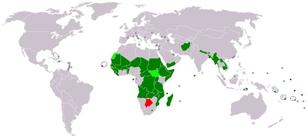Effects of global warming and climate change are expected to impact developing countries more than wealthier countries, as most of them have a high 'climate vulnerability.' The Sustainable Development Goals, by the United Nations, were set up to help overcome many of these problems. Development aid or development cooperation is financial aid given by governments and other agencies to support the economic, environmental, social and political development of developing countries.